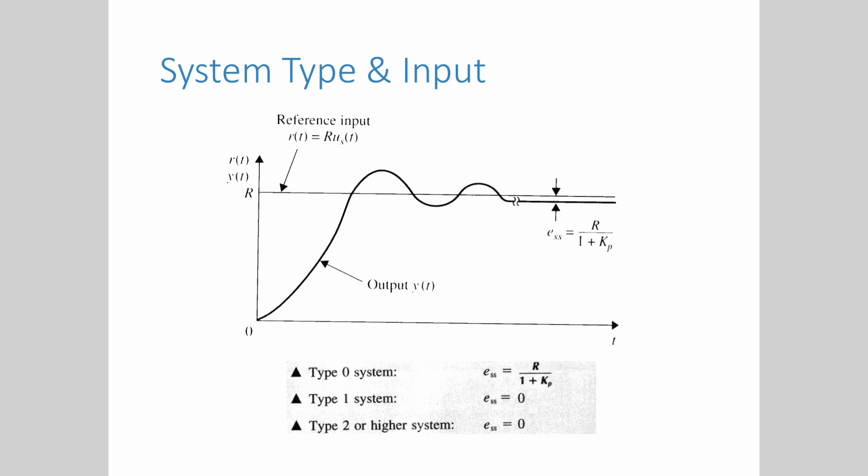To conclude, for a step input we can expect finite steady state error for a type 0 system, whereas for the type 1 and 2 and higher will yield 0 steady state error.